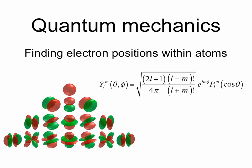Quantum mechanics is littered with trigonometry. If you want to find electron positions or orbitals within atoms, some of which are displayed here, you would want to use spherical harmonics, which involve cosines.